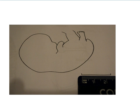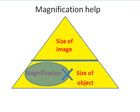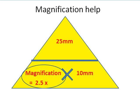So if we then look at our calculation triangle, we're working out magnification. We've got the size of the image, which is 25mm, and the size of the object, which is 10mm. So put those values in, and 25mm divided by 10mm will give us a value of 2.5 times. Magnification is 2.5 times.